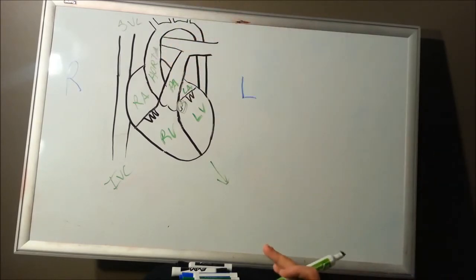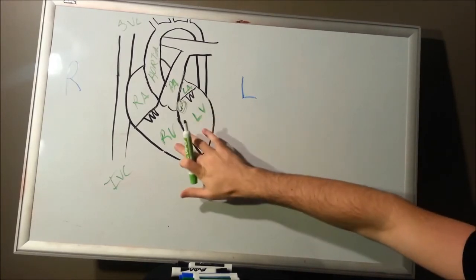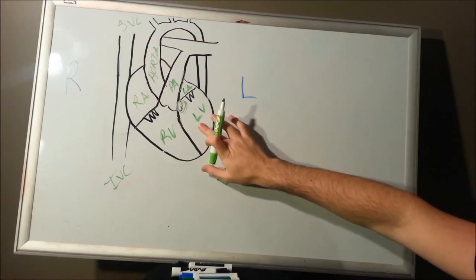Your aorta is your biggest vessel in your body, and that's going to pump to your whole systemic side. So, your organs, your muscles, your skin, your brain, everything, except for your lungs. Your lungs are handled by the right ventricle, your left ventricle does everything else.